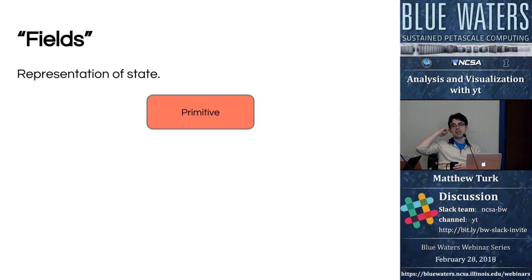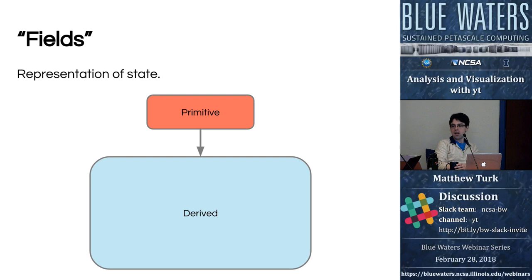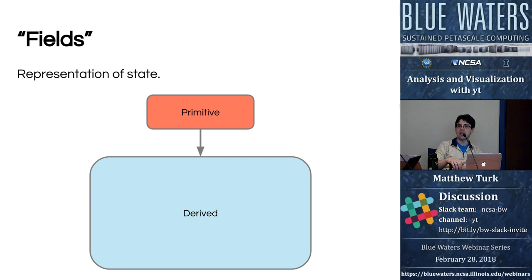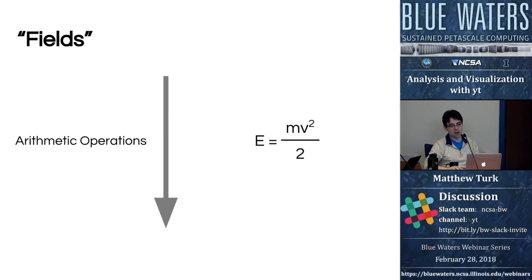From the context of simulations, oftentimes we are evolving primitive quantities — for instance density and internal energy — and from those primitive quantities we can generate a much larger number of derived fields. I like to think about derived fields as a vast in-potentia set of representations of state. We may not be able to read kinetic energy from disk, but if we have mass and velocity we can compute it — that field exists in potentia.